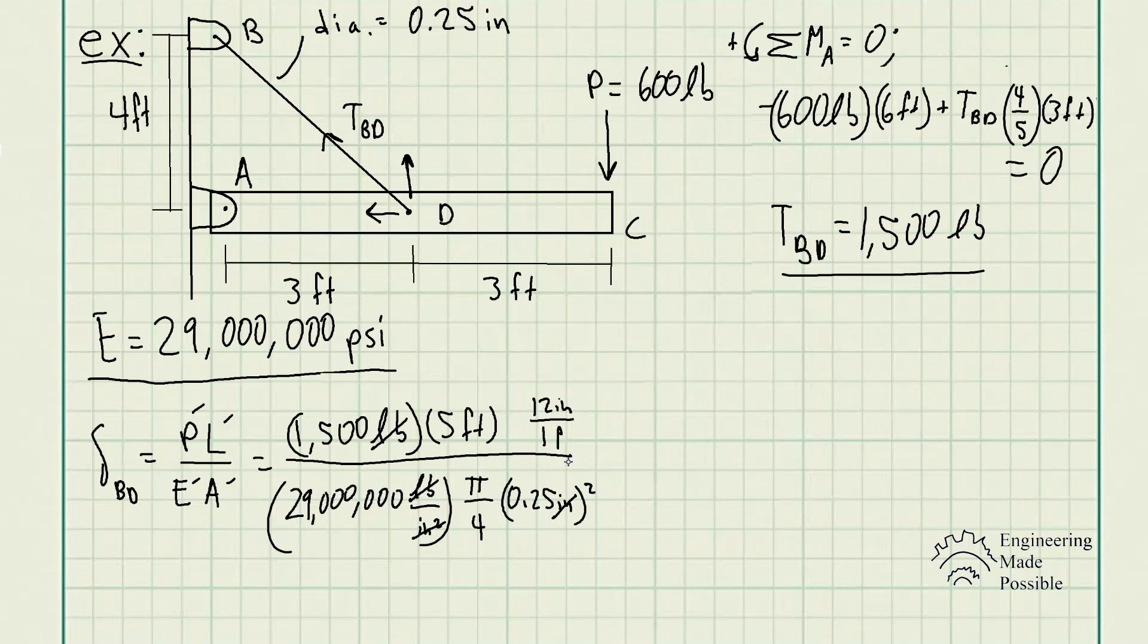We have our final answer in inches. It's always a good practice to make sure your units cancel out, and at the end of the day, make sure that the unit you are getting does indeed make sense with what you're solving for. The deformation of that wire BD, or how much it stretches, is 0.0632 inches, and this is how much it stretches due to that external load of 600 pounds being applied.